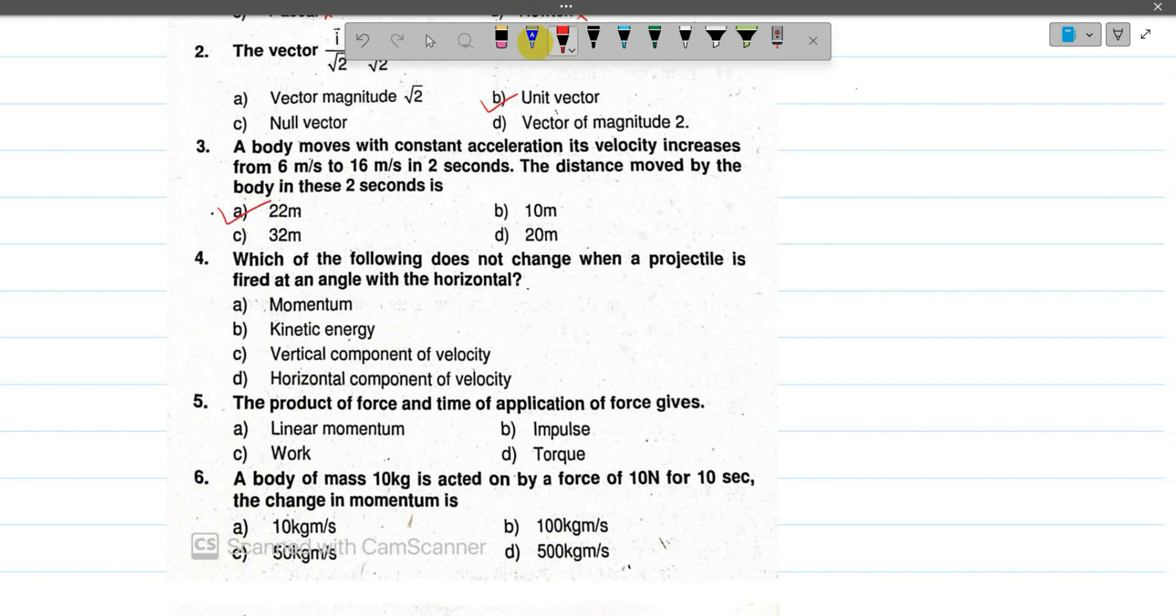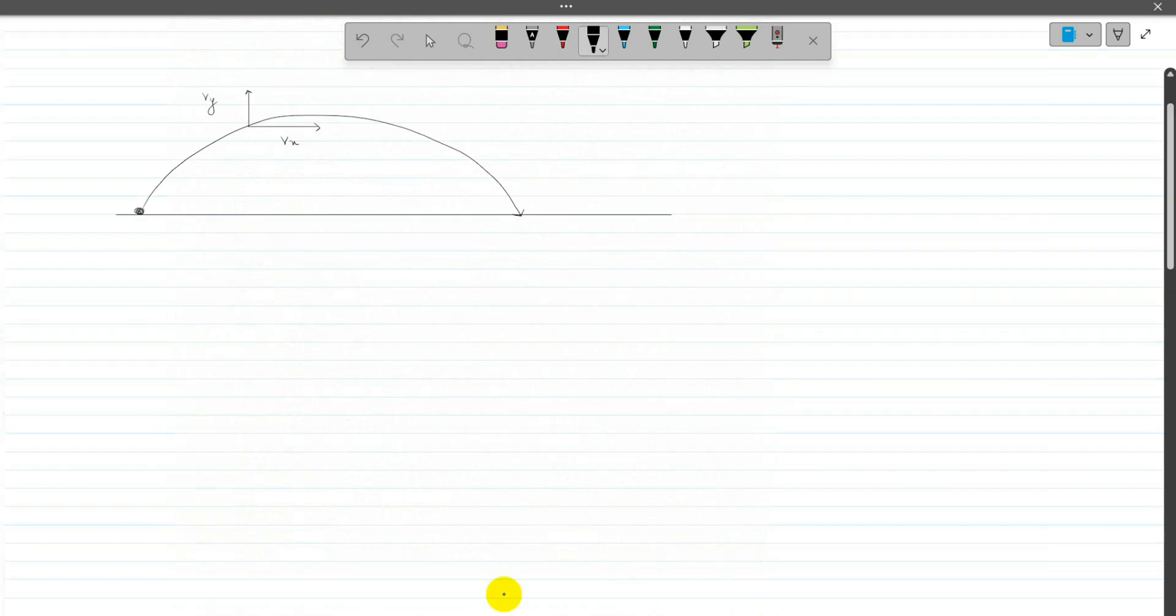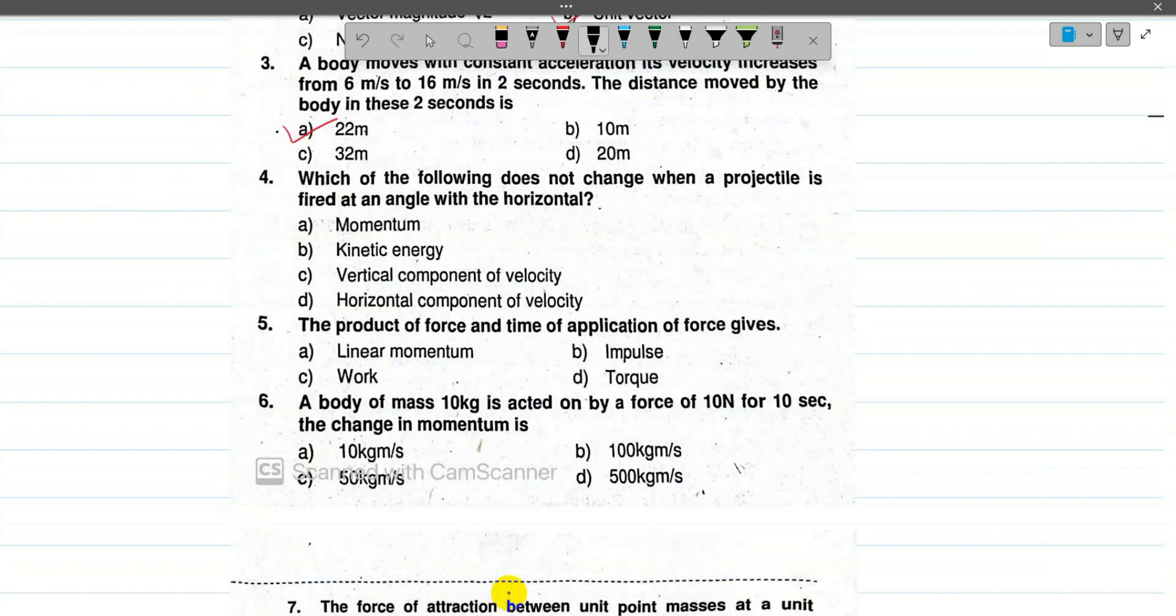Question 4: which of the following does not change when a projectile is fired at an angle with horizontal? We have VX and VY components. The horizontal component and vertical component. Gravity affects the vertical component but the horizontal component remains constant. So the answer is the horizontal component VX.